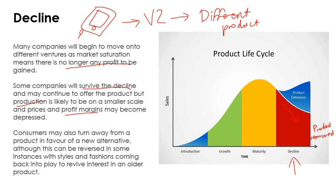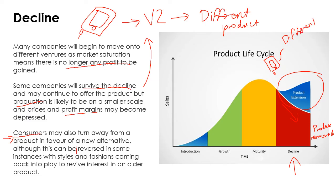The profit margins might be less, so it's not always in the best interest of the company to keep making this product. That's why companies move on so quickly to version two or improved versions — that's why mobile phone makers bring out new versions all the time. At this point consumers may turn away for a new alternative. However, you can counteract this by, for example, making the phone available in different colors, or offering a clever update, new software, or a new deal, which is going to basically extend the life of the product.